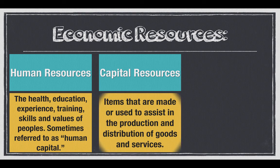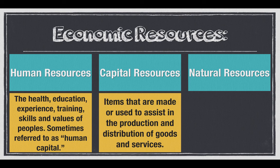Capital resources are items that are made or used to assist in the production and distribution of goods and services. A capital resource could be a machine like a drill press — it still needs a human resource to operate it, but it's being used to assist in production. A road, a driveway, or a runway for an airport can also be a capital resource because they help in the production or distribution of a good or service.